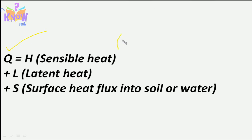Sensible heat is the part of heat that we can feel. If you are standing barefoot on the ground and feeling the heat, you are feeling the sensible heat. Latent heat — we know that when liquid turns into solid it releases latent heat, and for solid to turn into liquid it needs latent heat. Latent heat flux moves energy globally when solid, liquid, and gas interchange forms. The third is surface heat flux into soil and water. As the specific heat of water is very high, it absorbs a lot of heat. In land, this heat gets transferred deeper through conduction, and in water through convection.